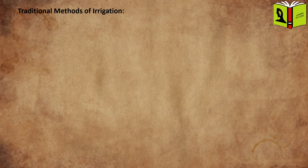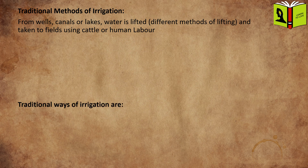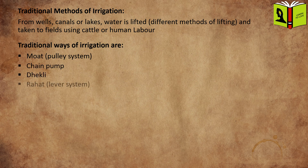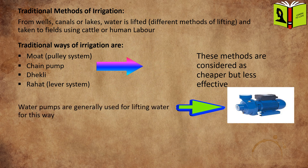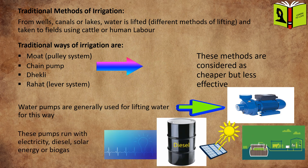Traditional Methods of Irrigation. From wells, canals, or lakes, water is lifted and taken to fields using cattle or human labor. Traditional ways of irrigation include Mote, Chain Pump, Dhekli, and Rahat. These methods are considered cheaper but less effective. Water pumps are generally used for lifting water in this way. These pumps run with electricity, diesel, solar energy, or biogas.